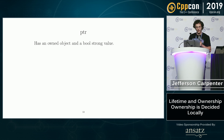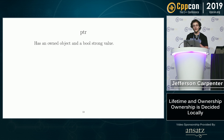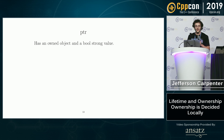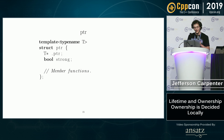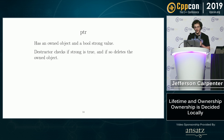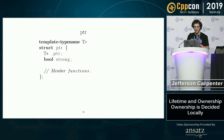Here's the introduction of this "putter" class. It has an owned object and a bool strong value, so there is no atomic ref count at all — no ref count, just a boolean — and it deletes the owned object if it's strong, otherwise it doesn't.